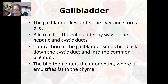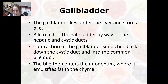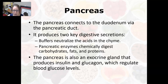The gallbladder lies under the liver and stores bile, which reaches the gallbladder via the hepatic and cystic ducts. Contraction of the gallbladder sends bile back down the cystic duct and into the common bile duct, where it joins with the pancreatic duct. Bile then enters the duodenum, where it emulsifies the fat in the chyme.